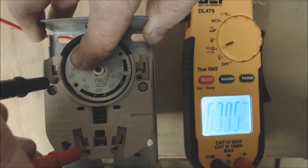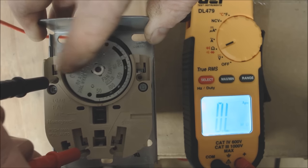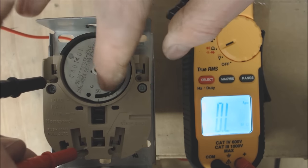When we take this dial backwards, you see at 90 degrees the connection has now opened up and it reads OL. That means the blower motor is off.